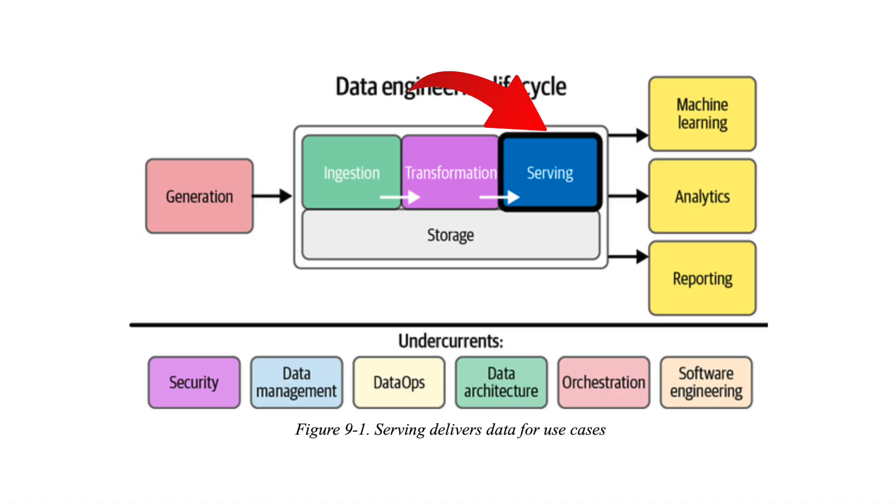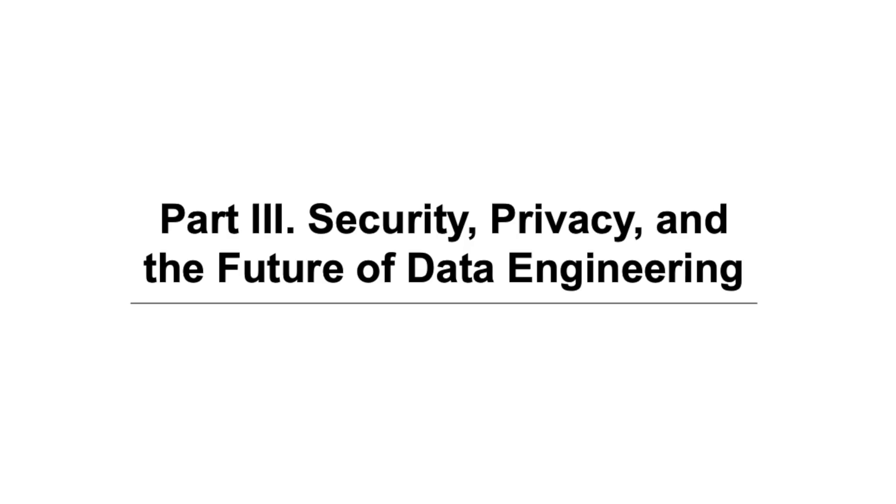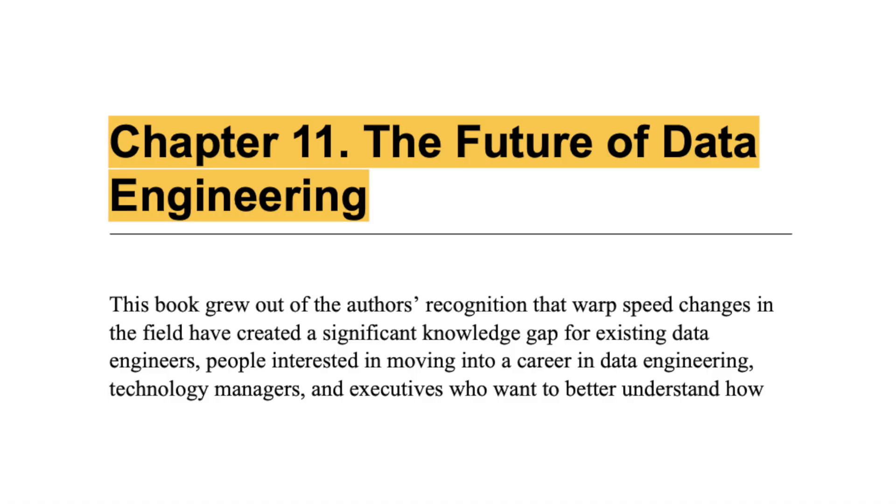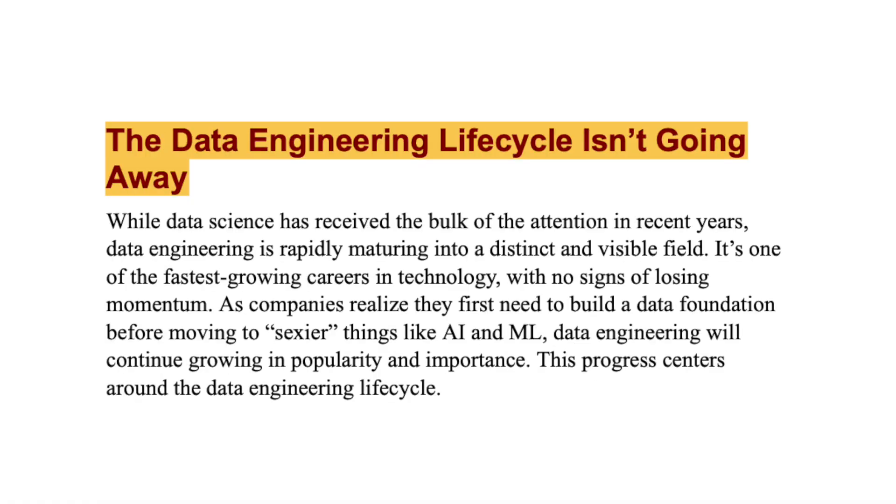The last chapter of part two focuses on the data serving part. Part three is a little bit short but very important — it talks about security, privacy and the future of data engineering. The first concern of any company when they migrate their data to a cloud system is security and privacy: if I put my data onto cloud platforms will it be secured, what kind of encryption are we using, is the network secure when we transmit data from one system to another? All of these best practices are covered in this chapter, and after that you will get a view of the future of data engineering and what you can expect.